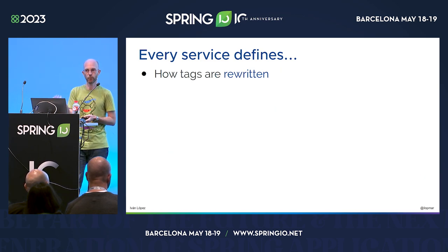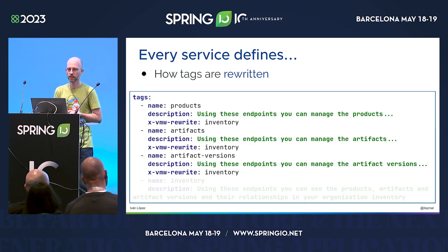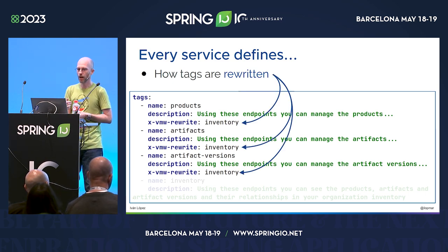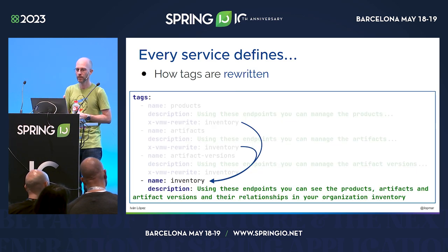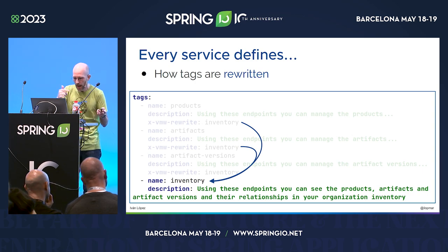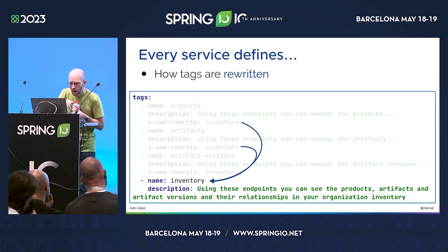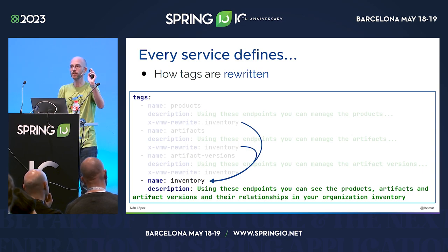The last optional thing is rewriting tags. When you define an endpoint, you can associate it with a tag, and in Swagger UI, all endpoints with the same tag are grouped together. Every service has endpoints with different tags, but we wanted to expose them under different tags that make sense from the client perspective. For example, tags named products, artifacts, and artifact versions could all be rewritten to inventory, grouping them together in the unified OpenAPI.